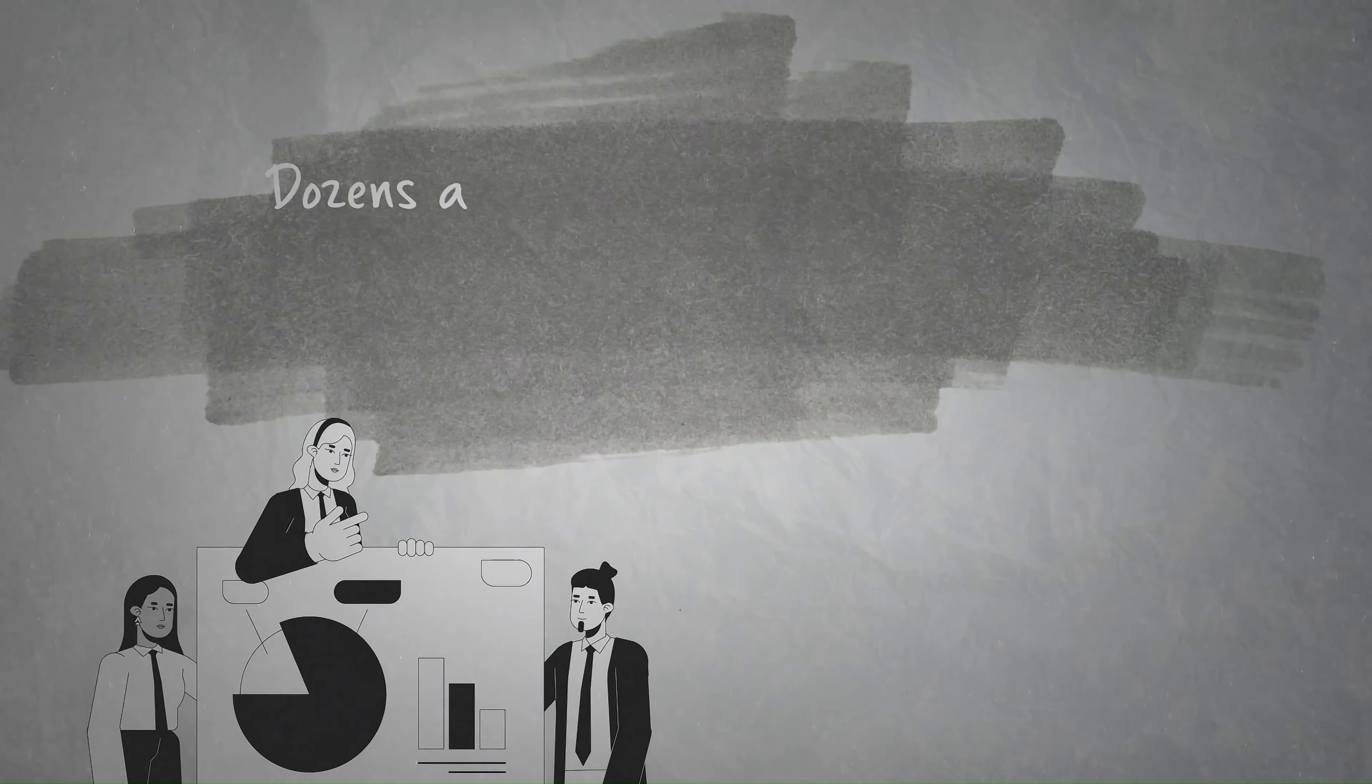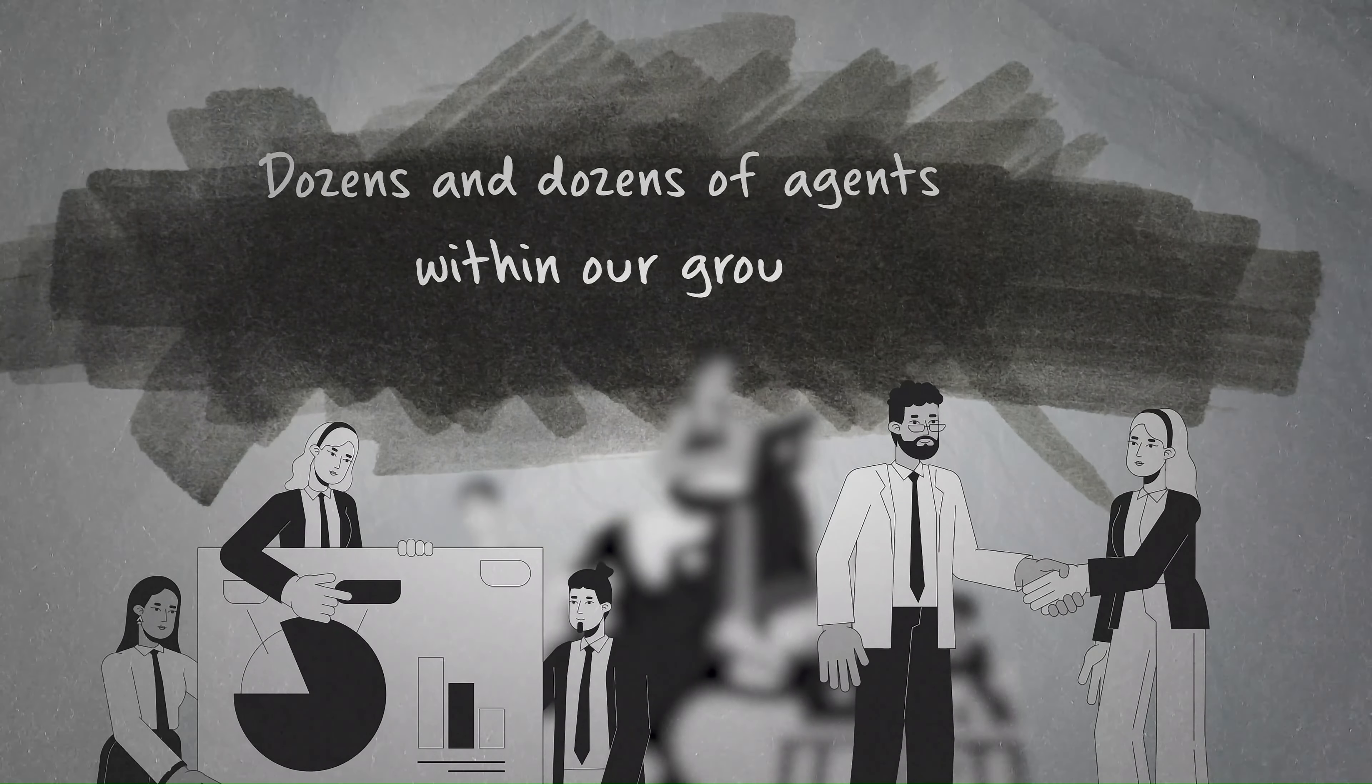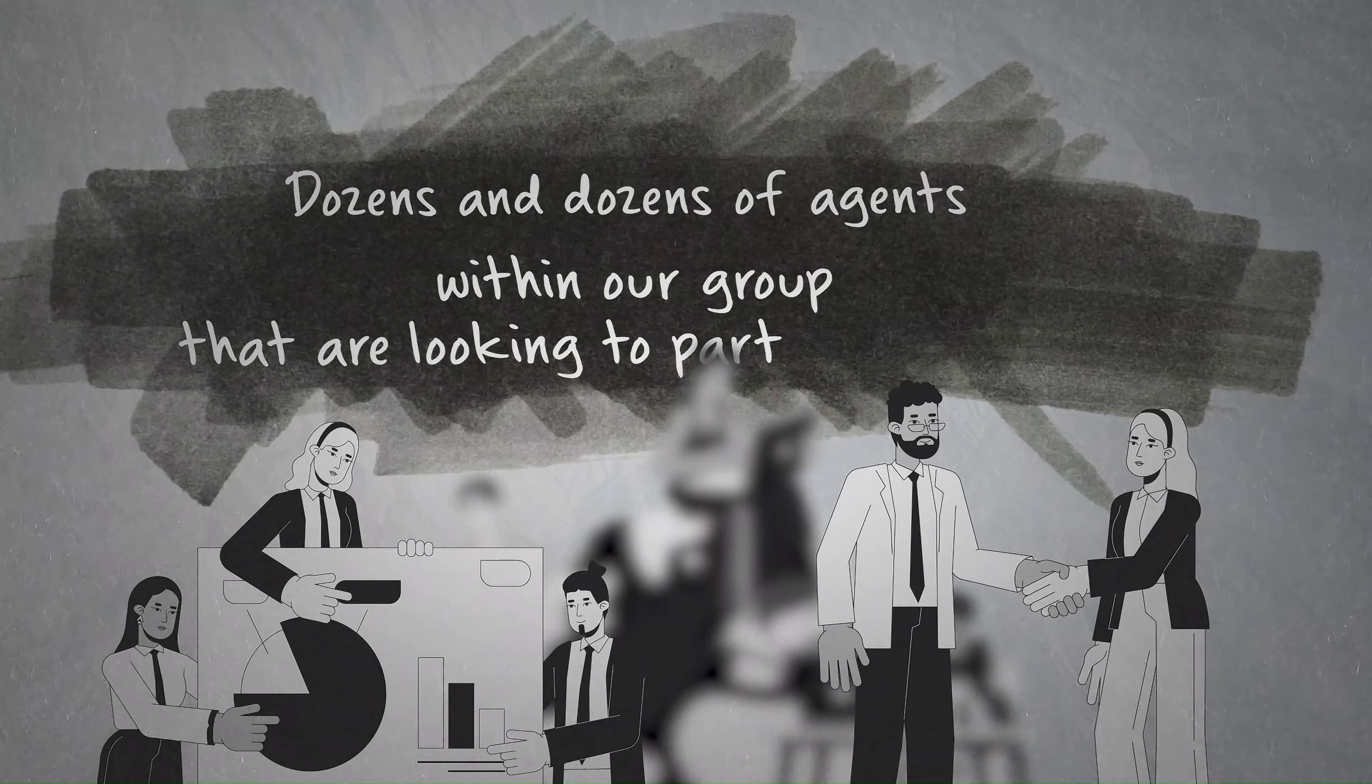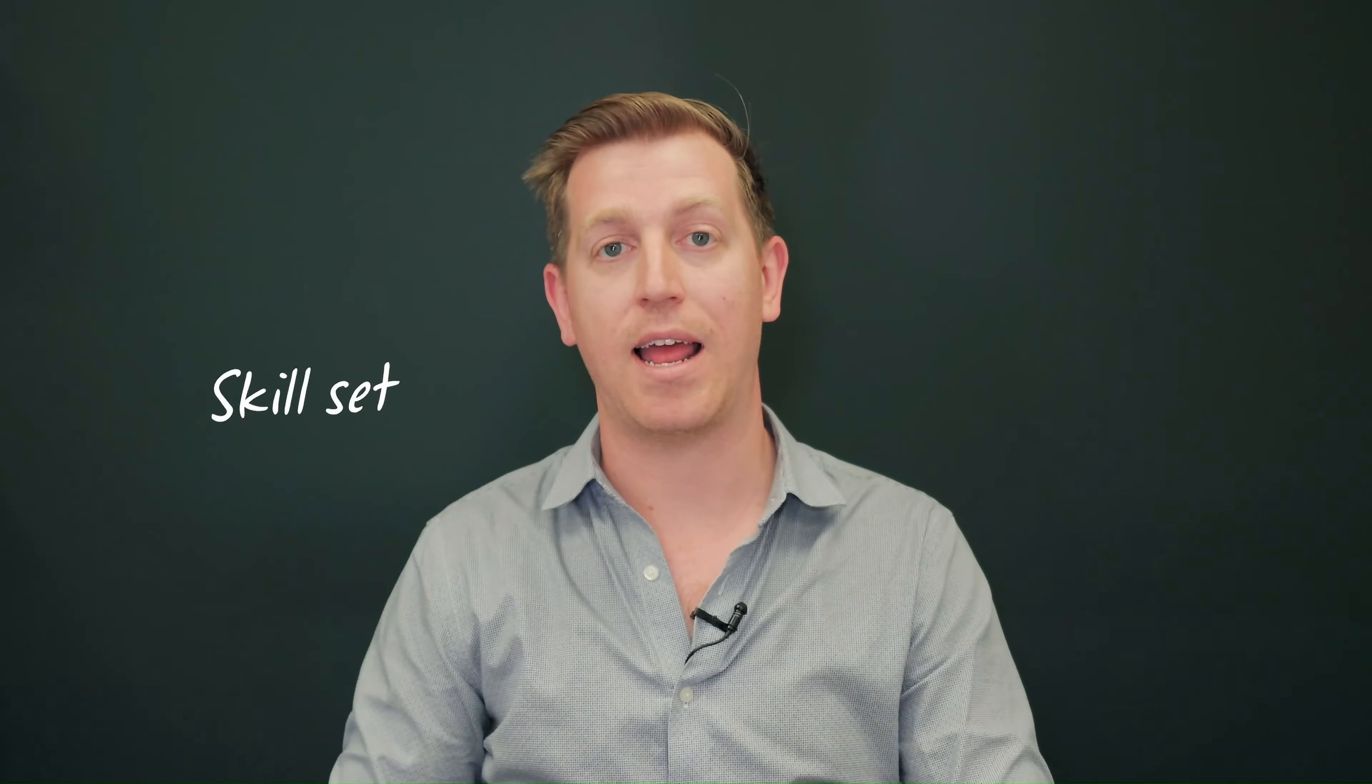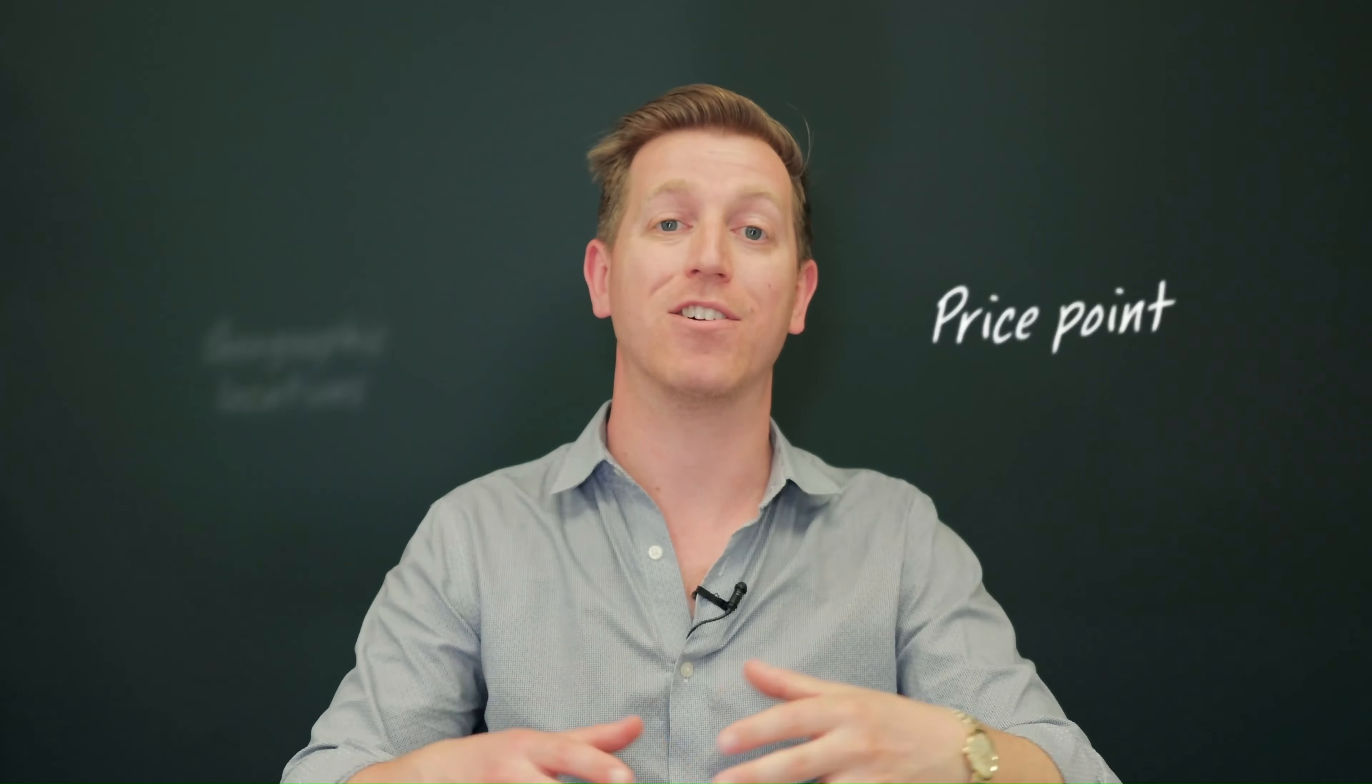Second, we have dozens of agents within our group that are looking to partner on demand. This could come in a multitude of ways. We partner together by co-brokering properties that are outside of our skill set, price points, or geographic locations. There are ways to partner up to create stability and income within our group through co-brokering.